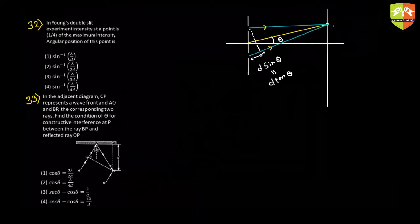So let's say that the path difference between these two is d sine theta. Now intensity has to be one fourth, so the intensity formula is I equals four I naught cos square phi by two. One fourth of the maximum intensity. Now maximum intensity is four I naught, so one fourth of that is I naught. So you can find out the value phi for which I becomes equal to I naught by using this formula.